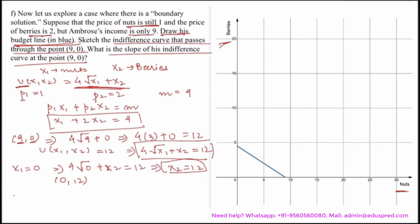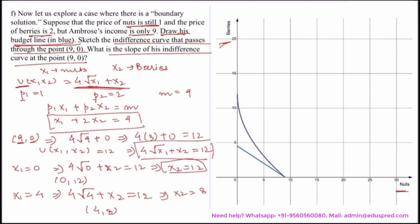Let's calculate one more point. Suppose x1 = 4: 4√4 + x2 = 12, so x2 = 12 − 8 = 4, giving the point (4, 8). Plotting all these points and joining them gives the desired indifference curve, shown as the purple indifference curve on the graph.